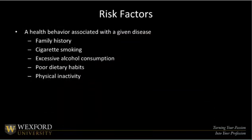Now we'll look at the risk factors that are involved. By definition, a risk factor would be a behavior that's associated with a given disease — for instance, smoking would be a risk factor for lung cancer. All of the risk factors you see here are, again, mostly preventable. Family history is really the only one that's not. Cigarette smoking is a personal choice, as well as alcohol consumption or lack of moderation. Obviously, poor dietary habits and physical inactivity are also not surprising to see on the list of risk factors in the population.